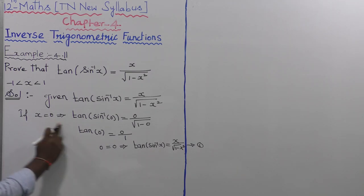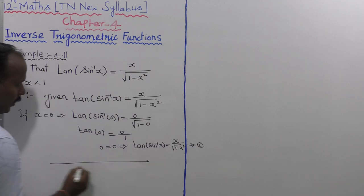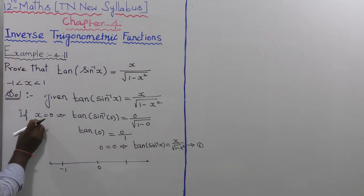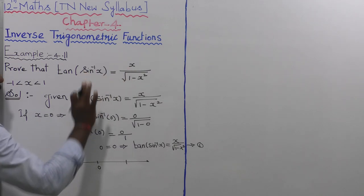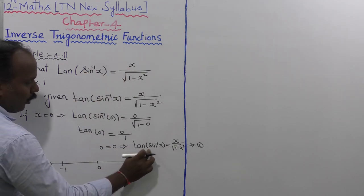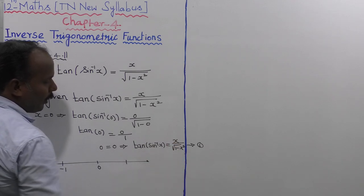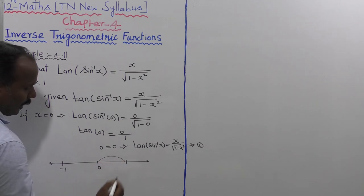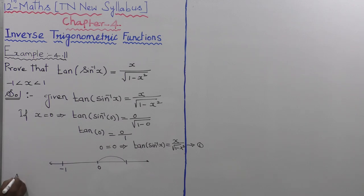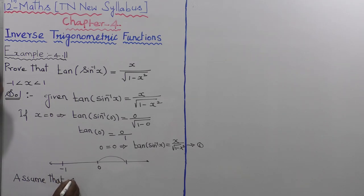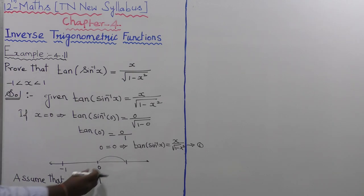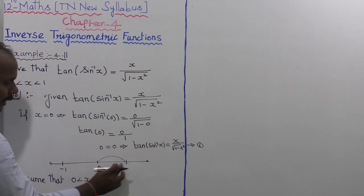Now for x equal to 0, let us take the number line. The given interval is minus 1 to plus 1 with 0 in the middle. The given statement is true for x = 0. Now let us take the first interval: 0 less than x less than 1.